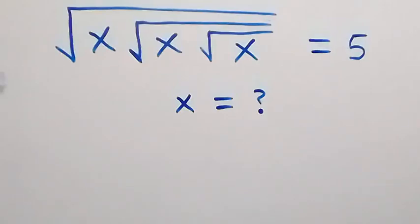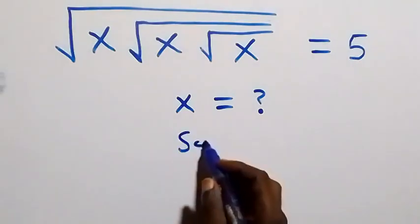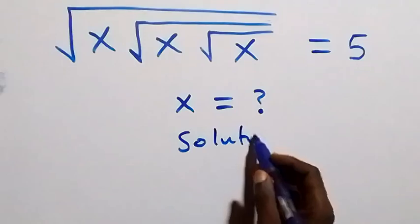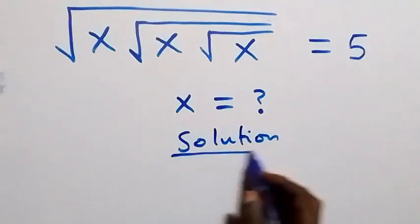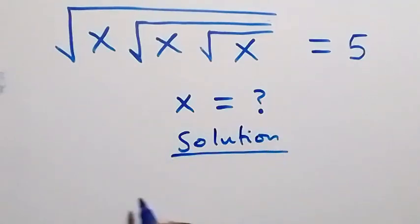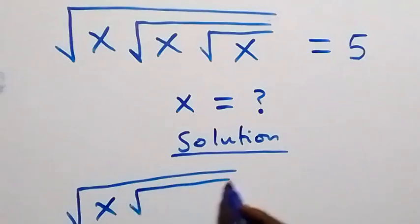Hello, you are welcome. How to solve this nice square root math problem. From what is given here, let's take the square on both sides — that is, we have square root of x and square root of x.